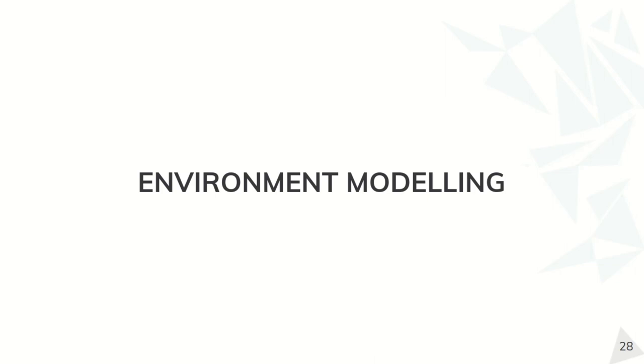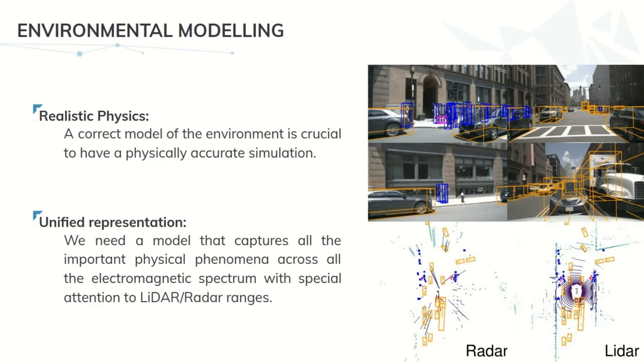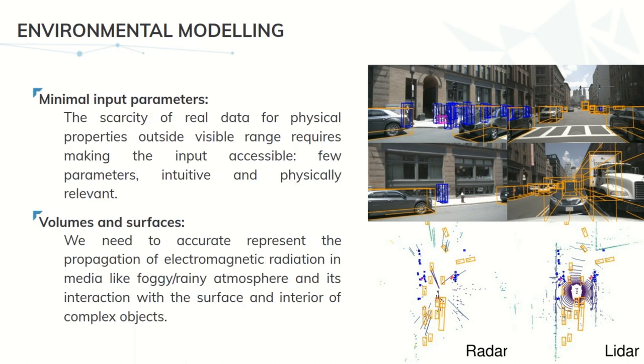Now, let's talk about the environmental modeling. The key missing aspect of the previous section was how exactly we can model the physical interaction that we are interested in. Of course, this is going to be crucial for having a realistic simulation. The main philosophy on our approach to this problem is having a unified representation for the physical properties that takes into account all the different materials and media across all the electromagnetic spectrum, taking special attention in the LiDAR and radar frequency ranges. For this, we want to consider the minimal number of input parameters as possible, without losing any important physics. This is going to be important due to the scarcity of measurement of physical properties outside of the visible range. For this, we also want to be intuitive and physically relevant. Last, we need to take into account that our model needs to be able to deal with surface and volumetric interactions.